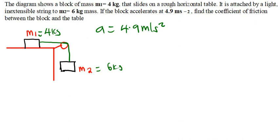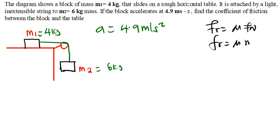One thing we have to understand is that as these two blocks are sliding, the only block which experiences friction is M1, because it's the one which is in contact with the surface. So what is the friction force? Friction force is given by mu times the normal force. The normal force for M1 is M1 times G, so the friction force will be mu times M1 times G.